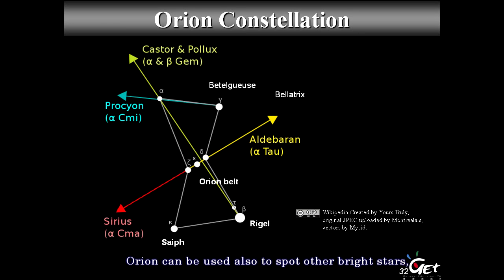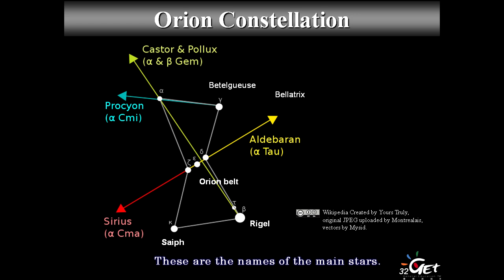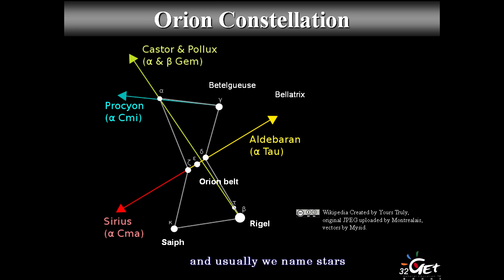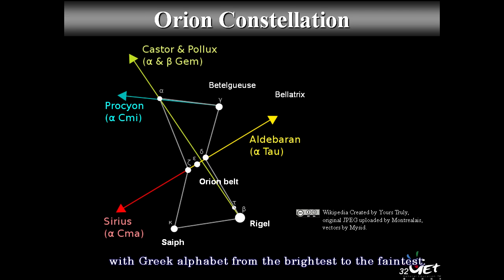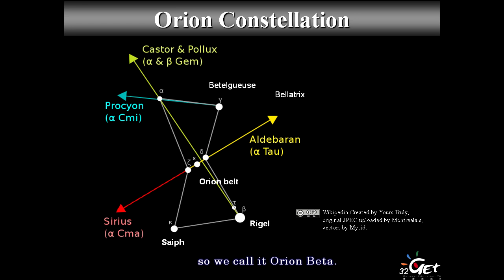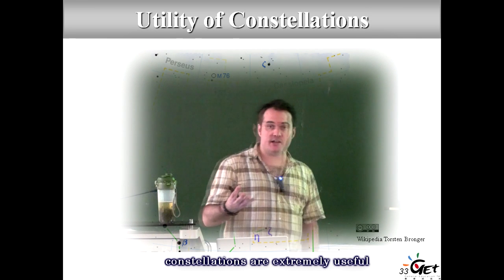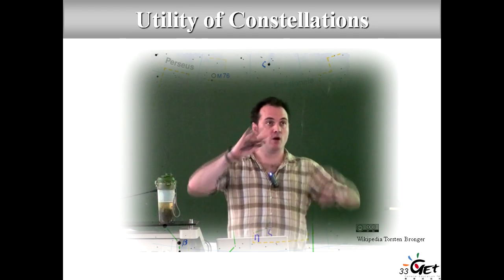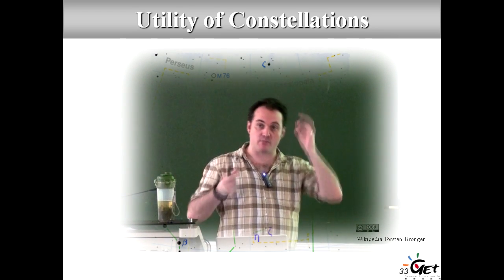Orion can also be used to spot other bright stars like Sirius, Aldebaran, Procyon, Castor and Pollux in Gemini. The main stars are Betelgeuse, Bellatrix, Rigel, and Saiph, plus the Orion belt. We usually name stars after the constellation they belong to and name them with the Greek alphabet from brightest to faintest. The brightest star in Orion is Betelgeuse, so it's called Alpha Orionis; the second brightest is Rigel, called Beta Orionis.